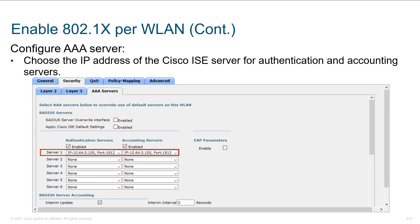Here we are looking at the AAA servers that are going to support this group. We're going to use 802.1x — how are they going to authenticate? Here we are with our list of servers: use port 1812 for authentication, 1813 for accounting, and we just check these off — server 2, server 3, server 4. Together those will go into our server group.